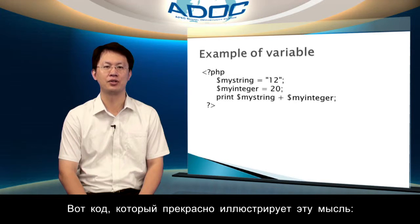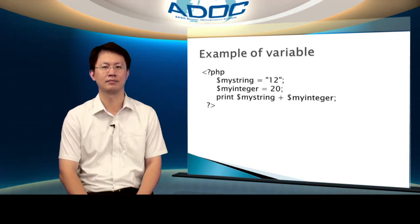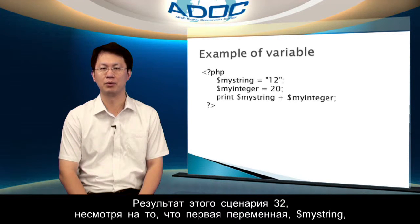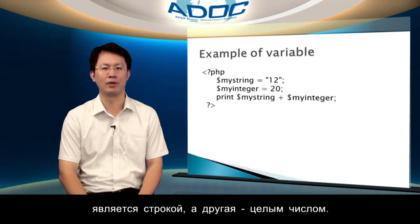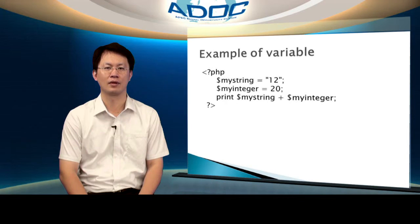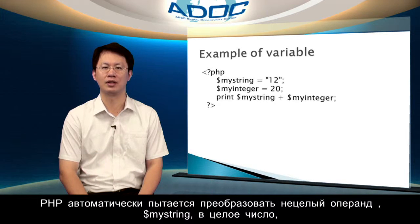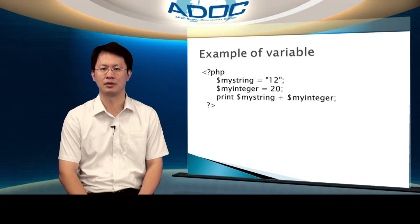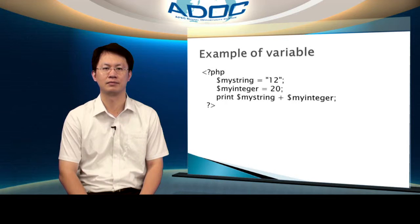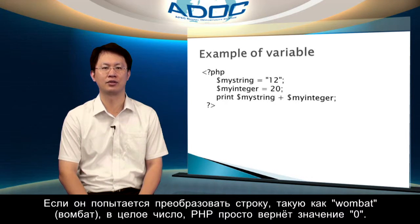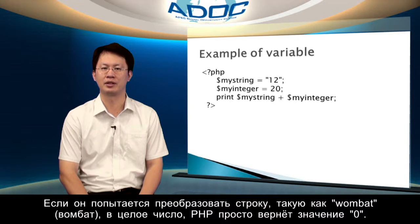Here is a piece of code that should illustrate the point nicely. That script will output 32, despite the fact that the first variable, mystring, is a string, whereas the other is an integer. PHP will automatically attempt to convert the non-integer operand, mystring, into an integer, and will find that it is, in fact, an integer inside a string. If it tries to convert a string like 'one bit' to an integer, PHP will simply return the value 0.